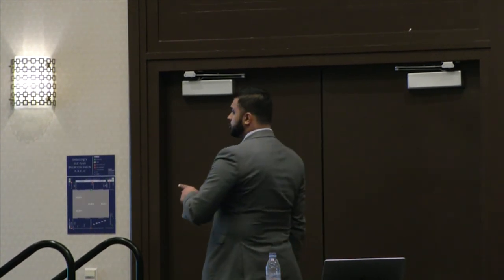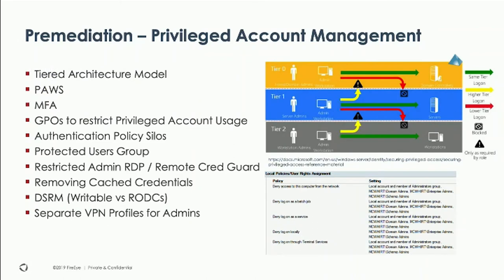The privilege account management tiered architecture model: tier zero, one, and two, with privileged access workstations and multi-factor authentication. Use Group Policies to restrict privilege account usage, login type, and scope. Implement protected user groups, restricted admin RDP, remove cached credentials from LSAS using KB2871997, DSRM for writable and read-only domain controllers, and separate VPN profiles for admins.